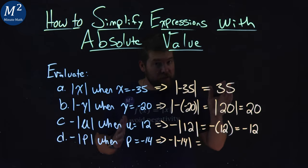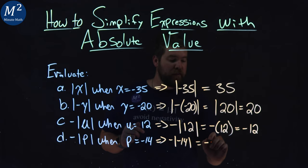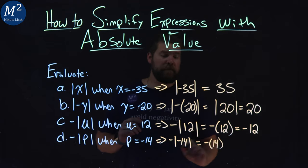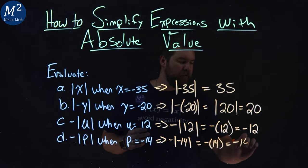Absolute value of negative 14 is a positive 14. So we have a negative that stays on the outside. In parentheses now, positive 14. Simplify that. Negative times 14 is negative 14.